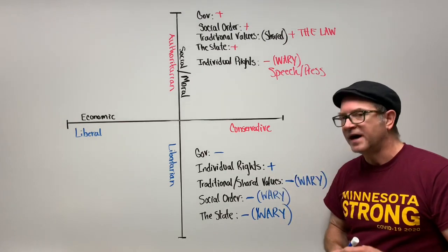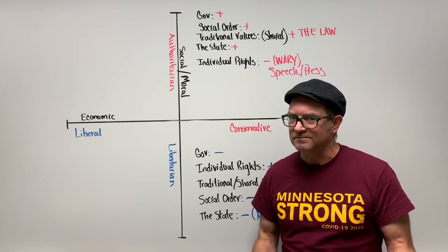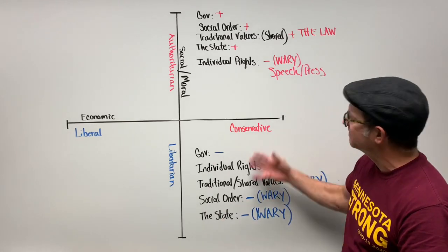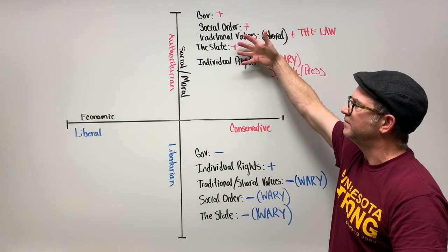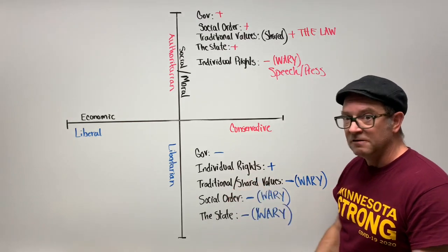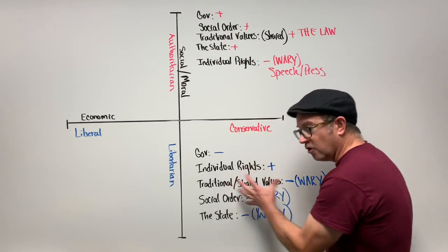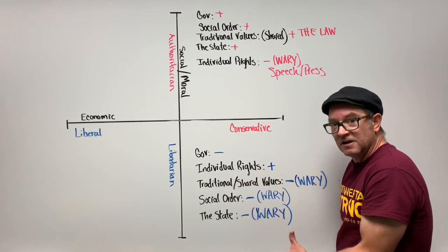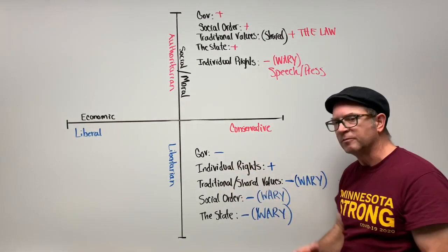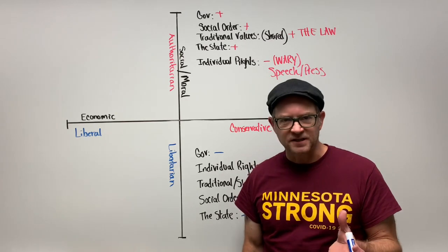So there are your basic definitions: up here, more government involvement in your social/moral life and more power to government to preserve these things — that's authoritarian. Down here, less government involvement in your social life, with more power remaining in the hands of the people in the form of rights and freedoms — that's libertarian.